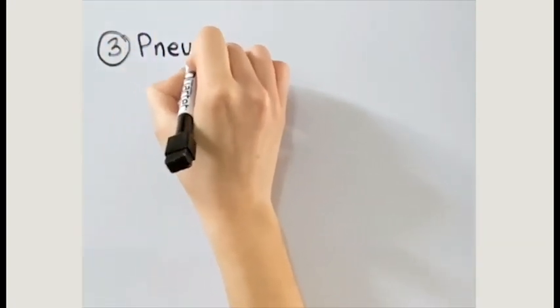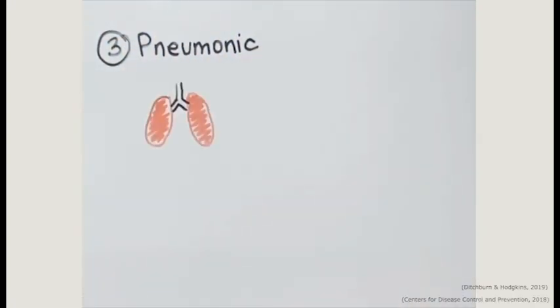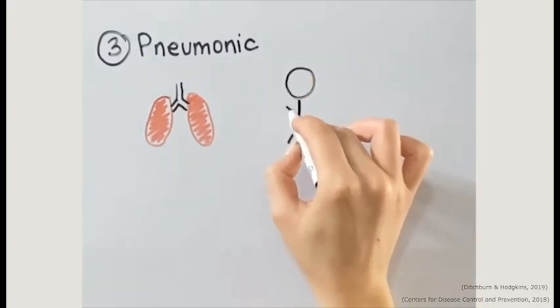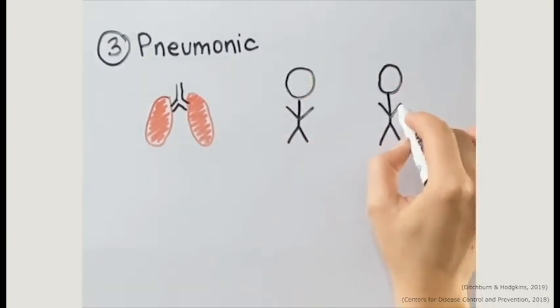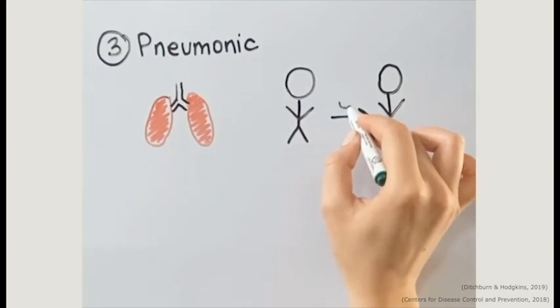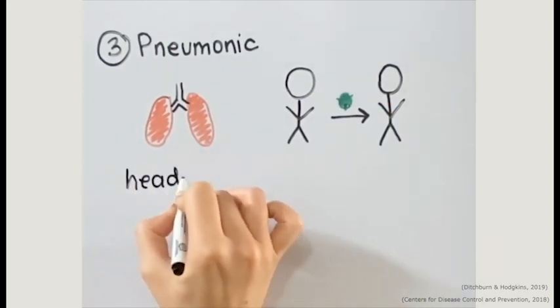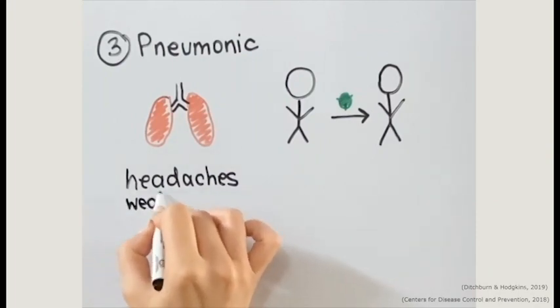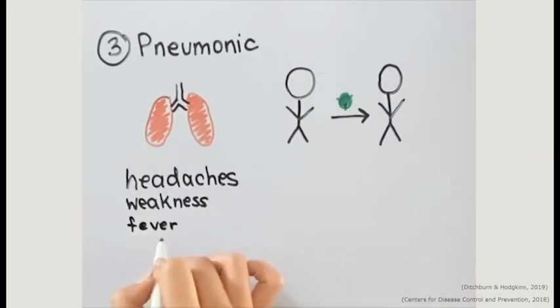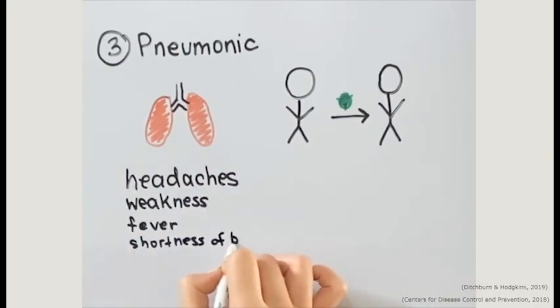The third type of plague is pneumonic plague, where the lungs are affected. This form is the most deadly and it can be transmitted from person to person or can develop from untreated bubonic plague. The symptoms associated with pneumonic plague include headache, weakness, fever, shortness of breath, chest pain, and pneumonia.